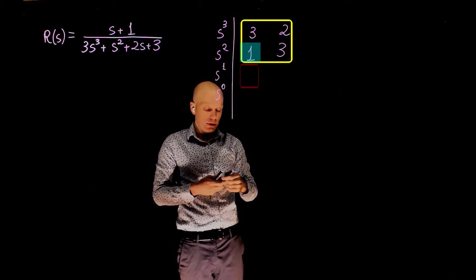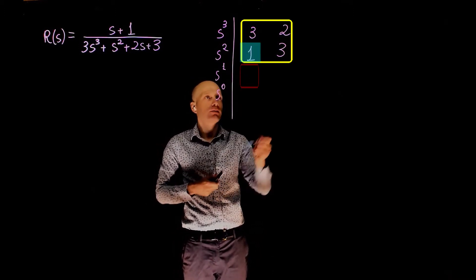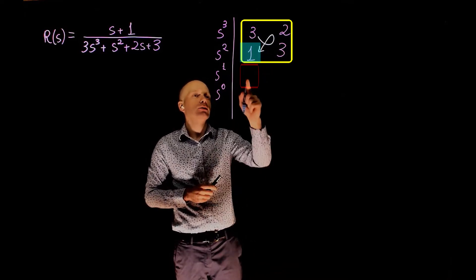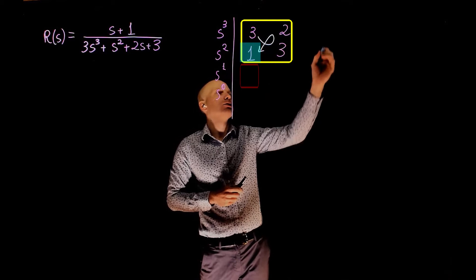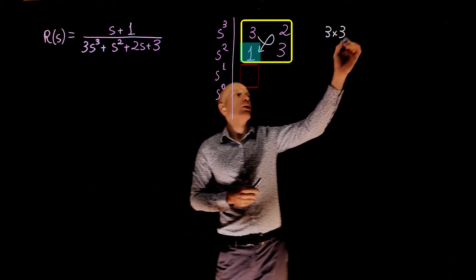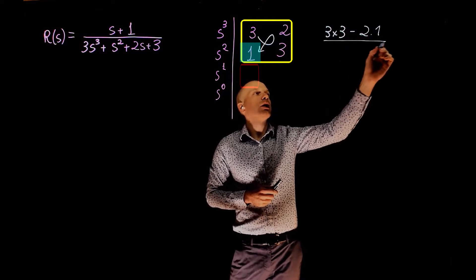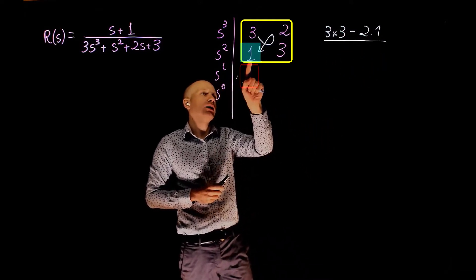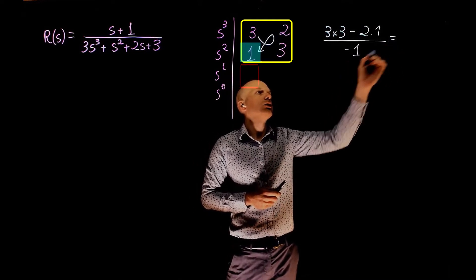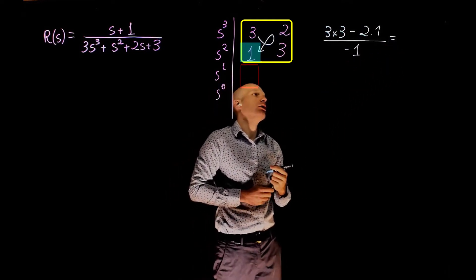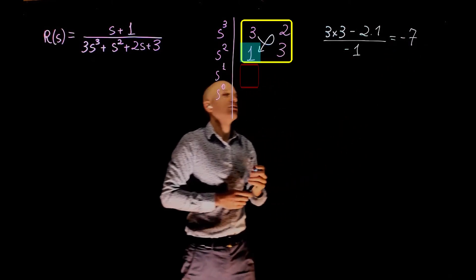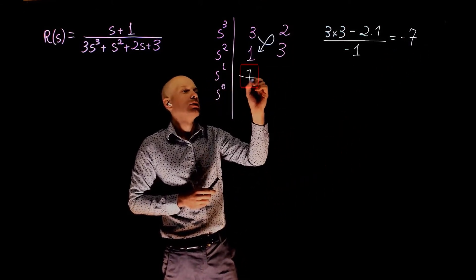Let's start with the first unknown element. It can be found using cross multiplication following this pattern: 3 times 3, minus 2 times 1, divided by the negative of the last element, which is negative 1. This gives 9 minus 2, which is 7, divided by negative 1 — that is negative 7. So this element is negative 7.